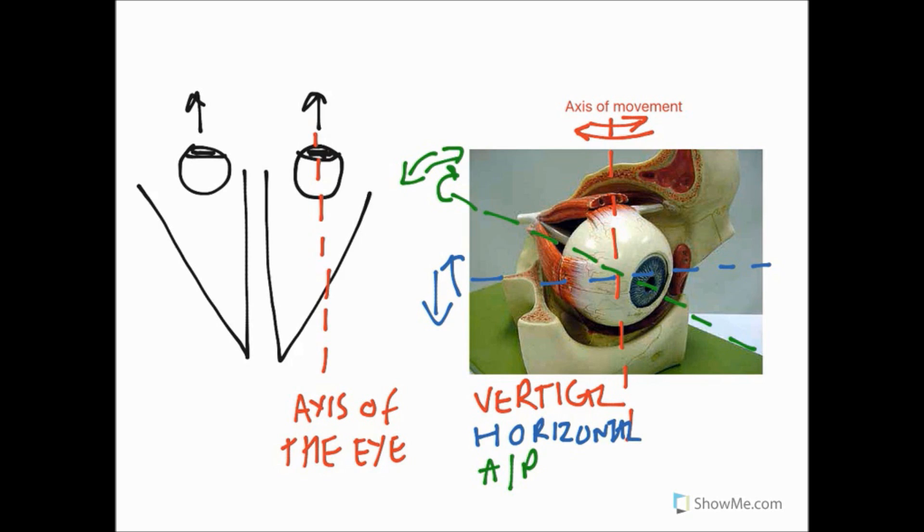Sometimes this is referred to as the optical axis. Now what we're going to do is we're going to draw on the point of attachment of most of the extraocular muscles, which is this circle here representing the common tendinous ring. If we draw a line from the axis of the orbit we'll notice that this is a different angle. So this is the axis of the orbit.